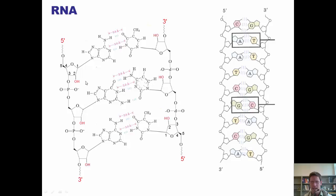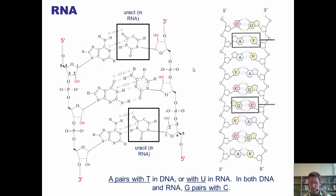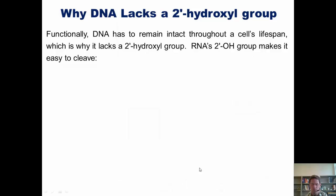Second, you'll notice that where DNA has thymine as its complementary nucleotide base to adenine, RNA substitutes uracil in thiamine's place. Thus, in DNA A pairs with T, and in RNA A pairs with U. In both DNA and RNA, G pairs with C.